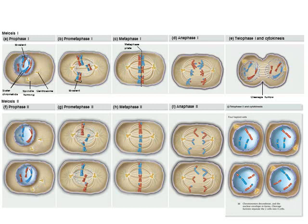In anaphase II, sister chromatids are pulled apart. The all-red chromatid goes off to the left; the mostly red with a little bit of blue goes off to the right. The other chromosomes are also pulled apart similarly. Once the chromosomes are pulled apart they travel to their respective poles. Then we have telophase II and cytokinesis — a nucleus forms around the three chromosomes at each pole, and the cells physically separate. Now we have four haploid cells, each with three chromosomes compared to our starting cell that had six.